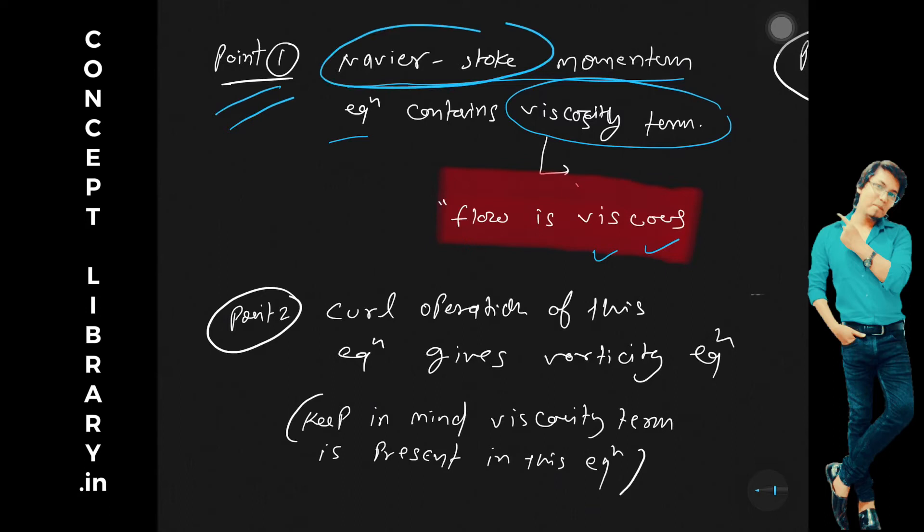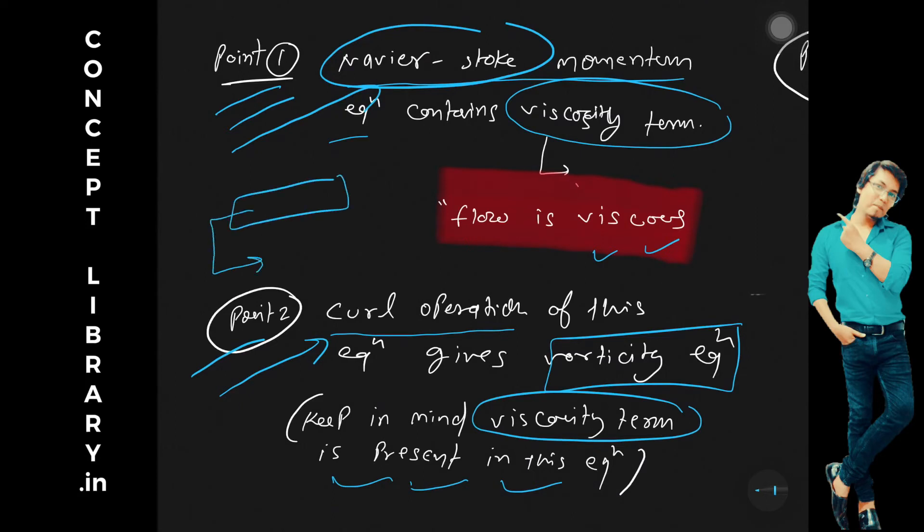Point two: if we do curl operation for Navier-Stokes momentum equation, then we get vorticity equation, correct? Keep in mind viscosity term is again present when we are doing curl operation. So we got a new equation, that is vorticity equation, and in this vorticity equation we have lot of terms. Among those we have one term which is viscosity term.